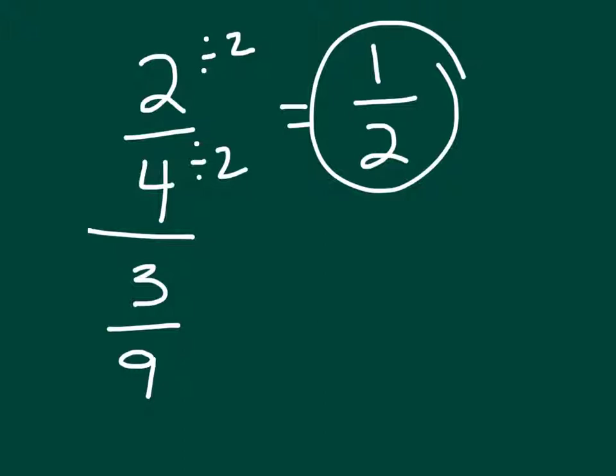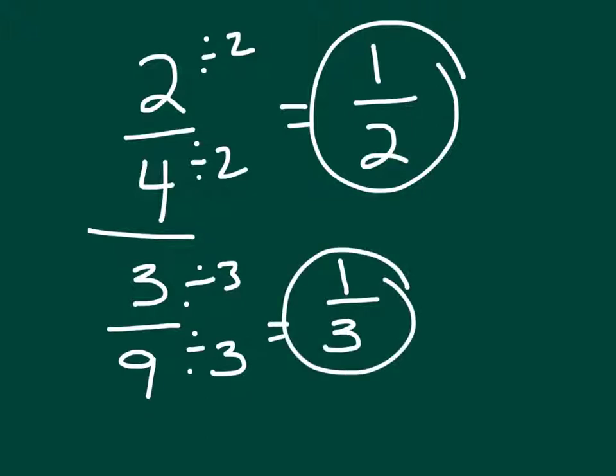In the bottom example, we have the fraction 3 ninths. I know that I can divide both the top and the bottom by 3. 3 divided by 3 is 1, 9 divided by 3 is 3, so this is my reduced fraction.